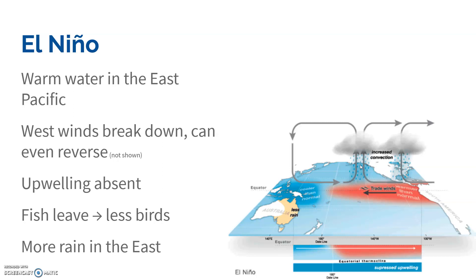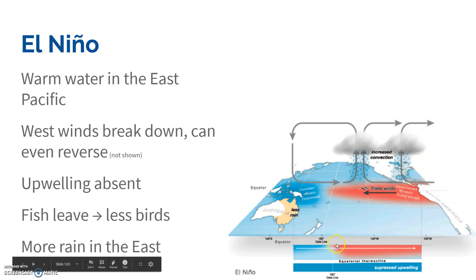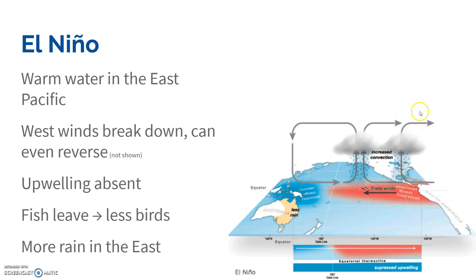With less upwelling, we have less nutrients. Less nutrients means less phytoplankton. Less phytoplankton means less fish, which means the bird population also drops. That also affects the people who need to fish and rely on that ecosystem. We also see changes in weather patterns — over in the west it's more dry, but in the east that's where all the rain is, because now that's where the warm, moist air is.